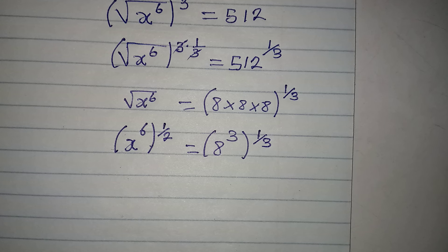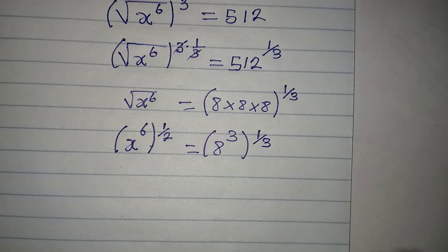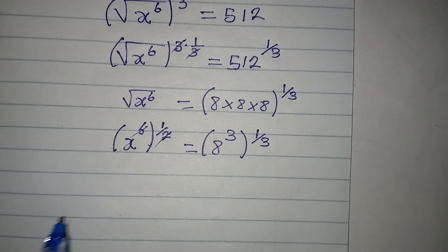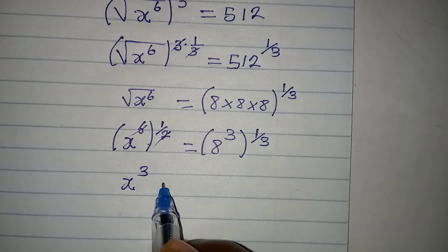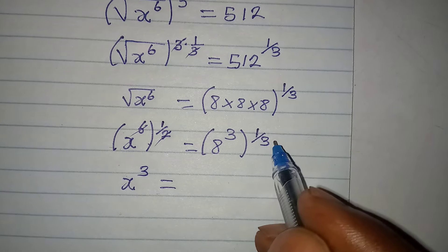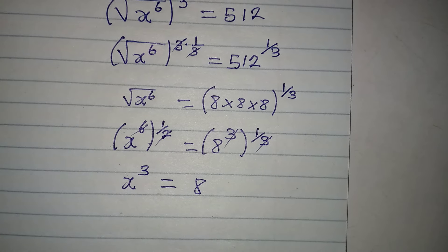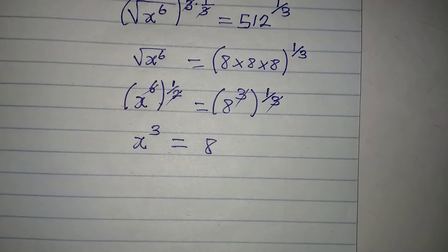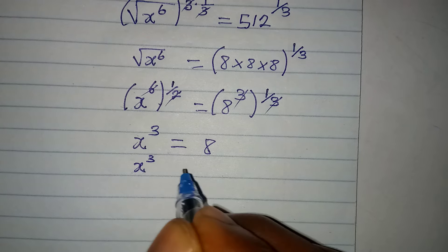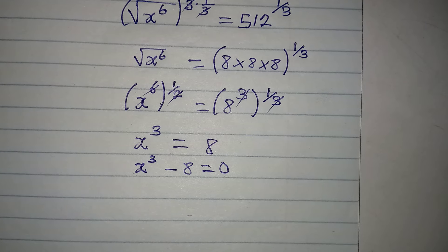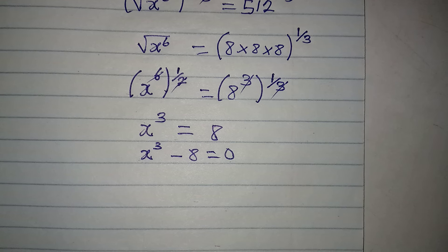Hold on and see how far this takes us. The exponents on the left multiply: 6 times 1/2 gives us x to the power of 3. On the right, the 3 and 1/3 cancel, giving us simply 8. Bringing everything to one side, we have x to the power of 3 minus 8 equals 0, which is a cubic equation and should give us 3 solutions.